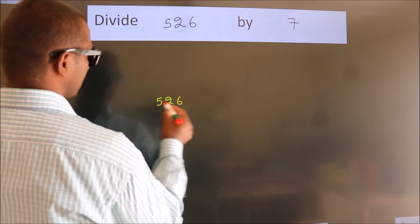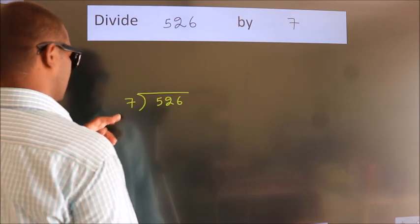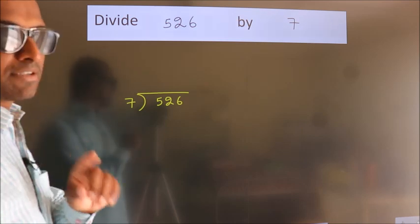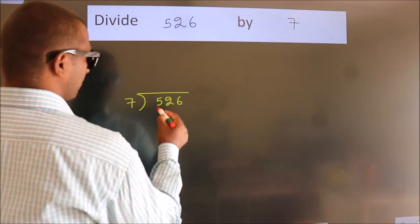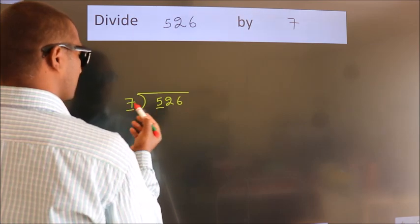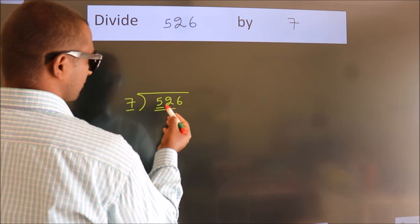526 here, 7 here. This is your step 1. Next, here we have 5, here 7. 5 is smaller than 7, so we should take 2 numbers, 52.